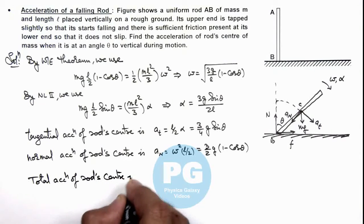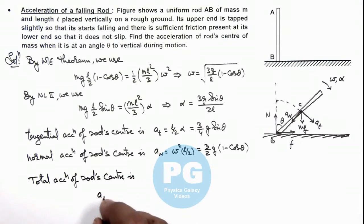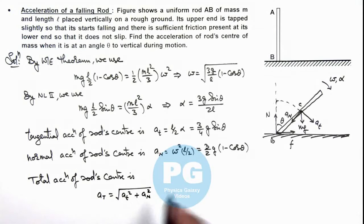This total acceleration is given by the square root of a_tangential² + a_normal². Now we can substitute both of these terms, and when you simplify these terms,